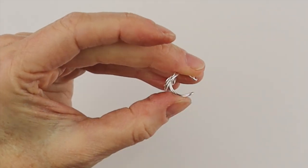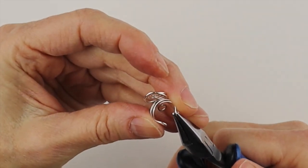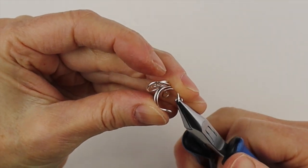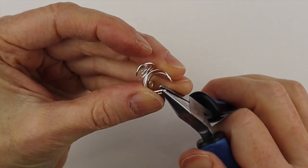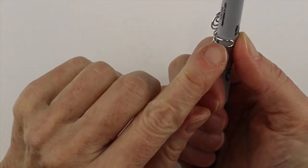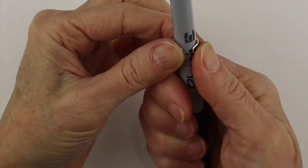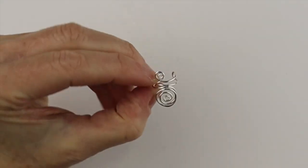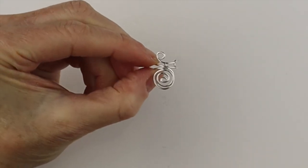This is the part that's going to go over the ear. If you need it more round, just get your pliers and bring it in a little bit more. If you have a mallet, you can always tap it a little bit too to harden it up. And there you have your cute and simple little ear cuff.